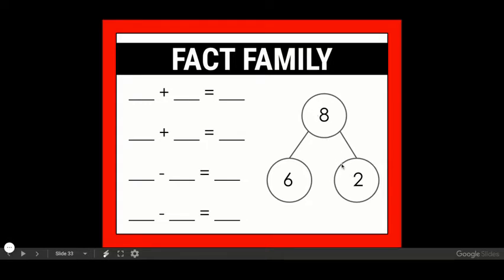2 plus 8 equals 6? No. I know that when I look at my number bond, I have to use my two parts, and those add together to get my whole. So my first fact is 6 plus 2 equals 8. Now if I reverse the order of my two parts, I can get my other addition fact. 2 plus 6 equals 8.